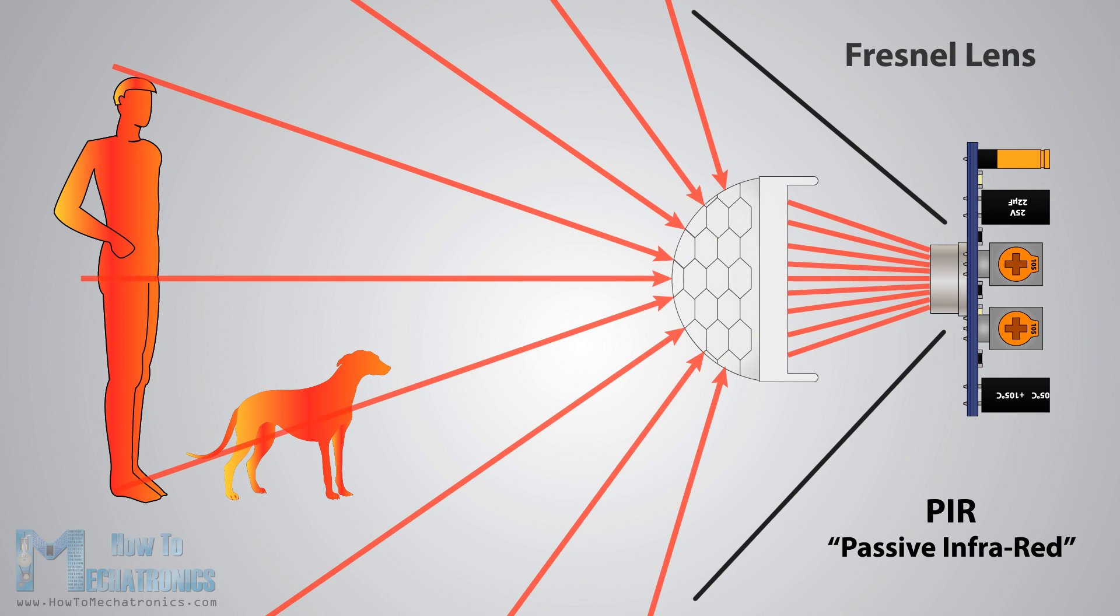The module also consists of a specially designed cover, named Fresnel Lens, which focuses the infrared signals onto the pyroelectric sensor.